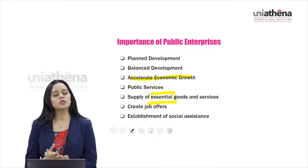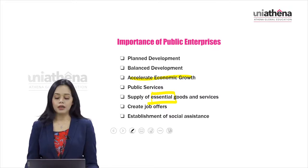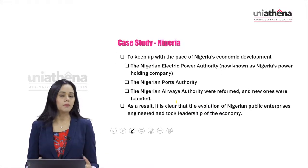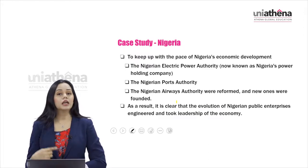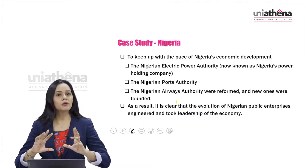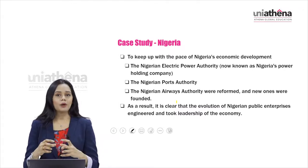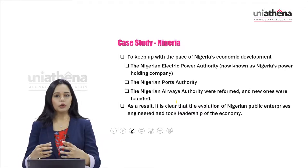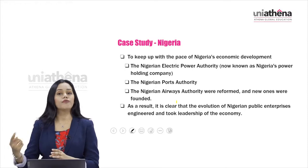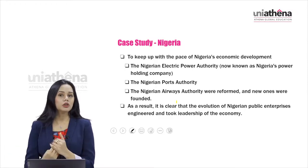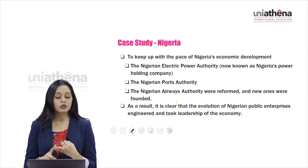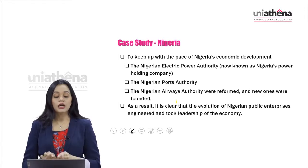Looking at the case study of Nigeria: Nigeria wanted to upscale their economy, which was not doing very well. They reformed three of their major public sectors. As discussed in the first lesson, you always look at the gap — you do the need analysis — and if an existing enterprise needs improvement, you reform it. Nigeria worked on three major companies: the Nigeria Electric Power Authority, the Nigerian Ports Authority, and the Nigerian Airways Authority.